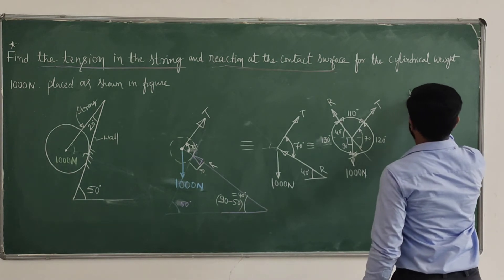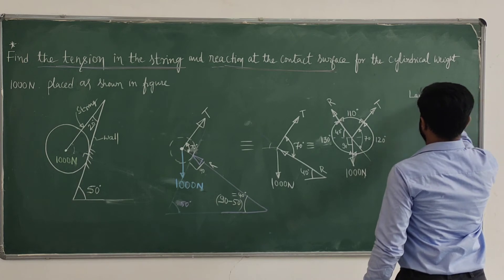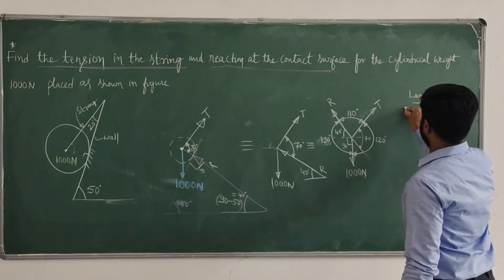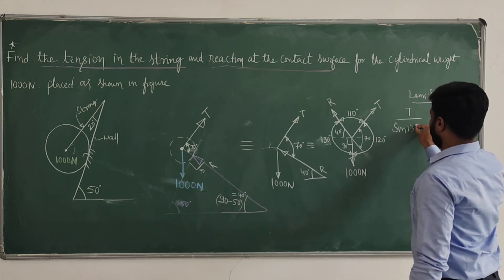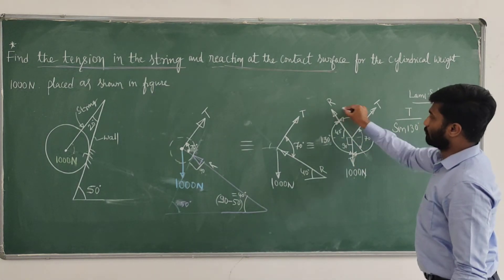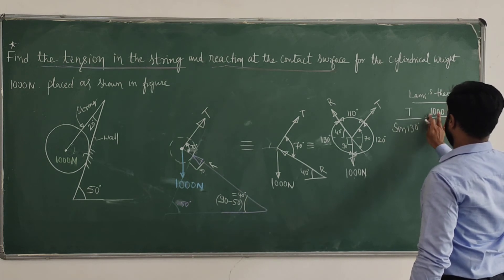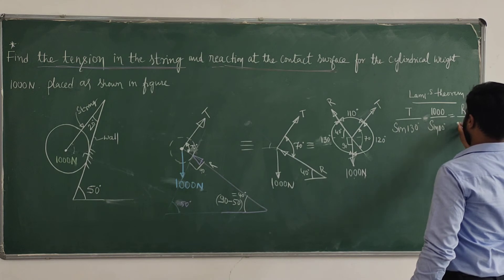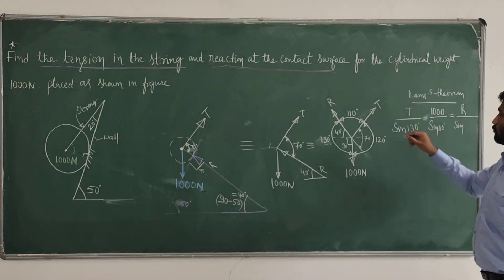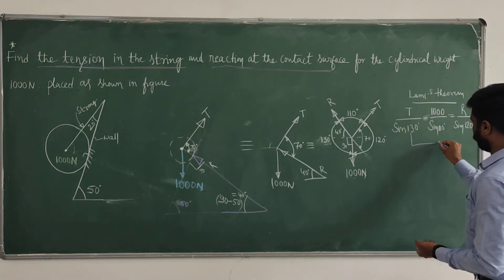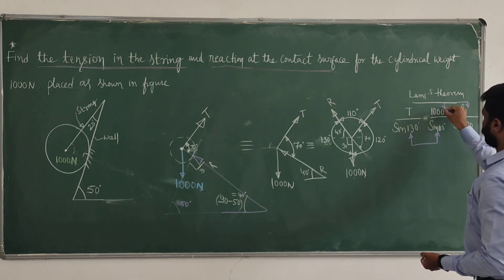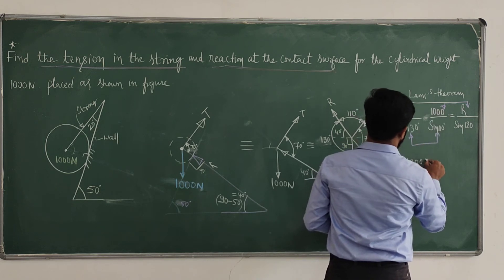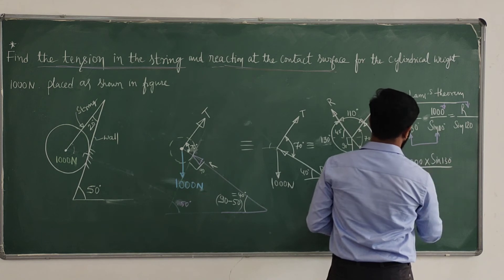After Lamy's theorem. What does Lamy's theorem say? One of the forces is directly proportional to the sine of the angle between the other two forces. Therefore: T divided by sine of 130, equals 1000 divided by sine of 110, equals R divided by sine of 120. Now compare these values — cross multiplication gives T equals 1000 multiplied by sine of 130 divided by sine of 110.